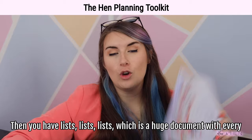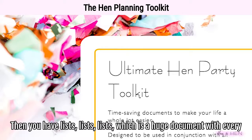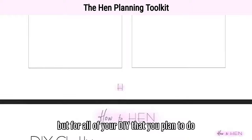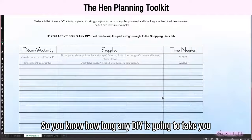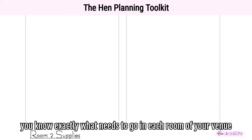Then you have Lists, Lists, Lists — a huge document with every list you could ever need. All your shopping lists, not just for food and general activities but for all your DIY plans. There are also planning lists so you know how long any DIY is going to take, and a room-by-room list so you know exactly what needs to go in each room of your venue and can check it off before you leave.